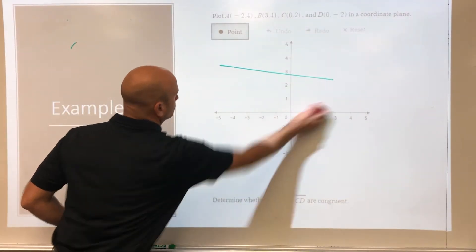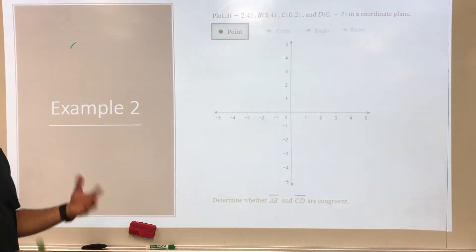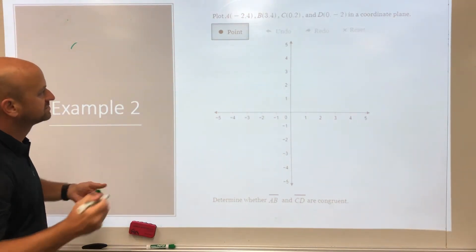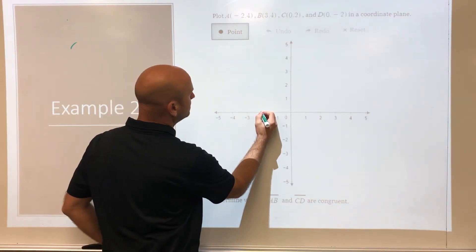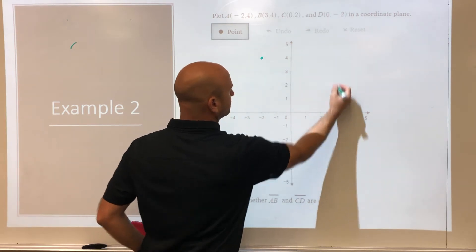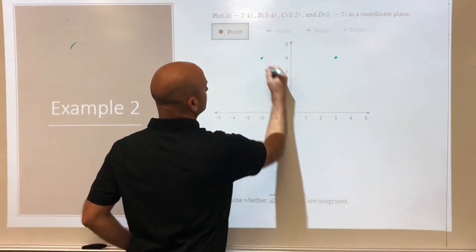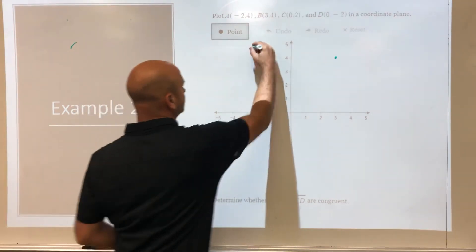Next one, they want you to plot some points here and determine if the segments are congruent. So first, plotting the point negative two, positive four is right here, and then three and four is right here. So they want segment AB, so we can connect these two.